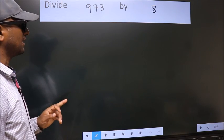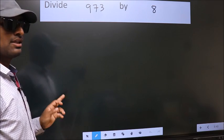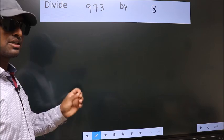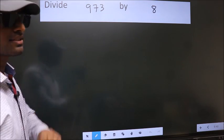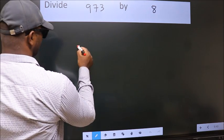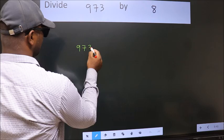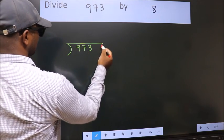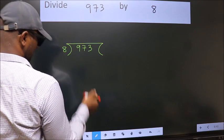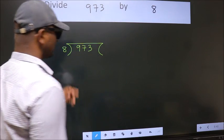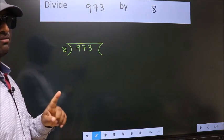Divide 973 by 8. To do this division, we should frame it in this way. 973 here, 8 here. This is your step 1.